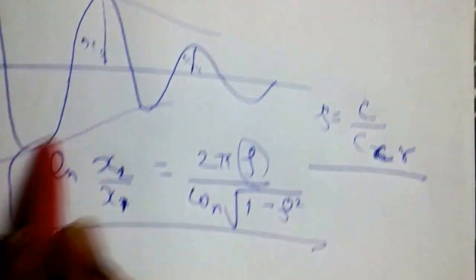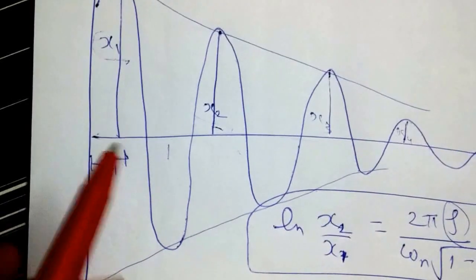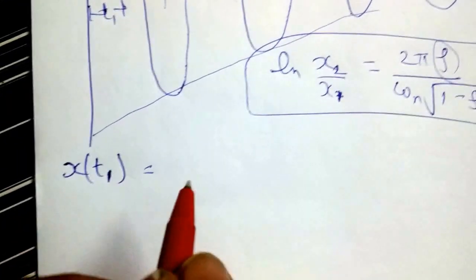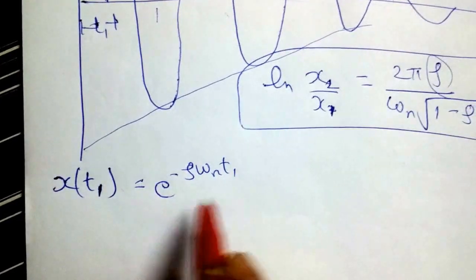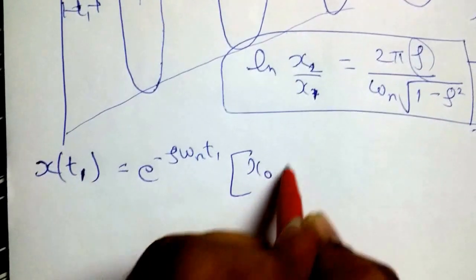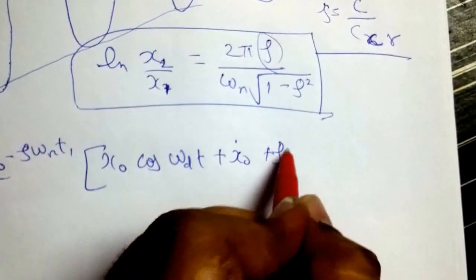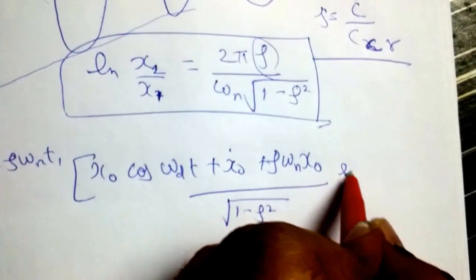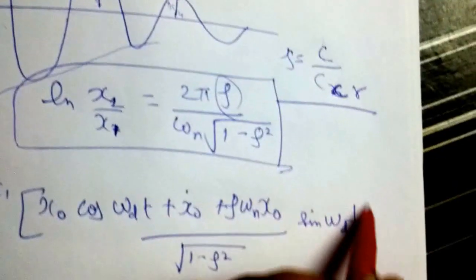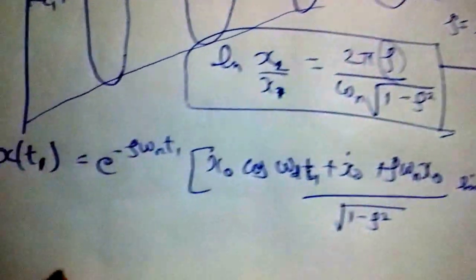We will now derive this equation. First, at time instant t1, the amplitude of vibration is x1. Since this is the free damped situation, the equation as derived in our lecture on the free damped case would be: x(t1) = e^(−ζω_n t1) × [x0 cos(ω_d t1) + (ẋ0 + ζω_n x0) / √(1 − ζ²) × sin(ω_d t1)].